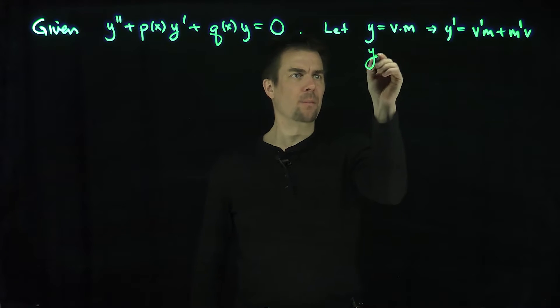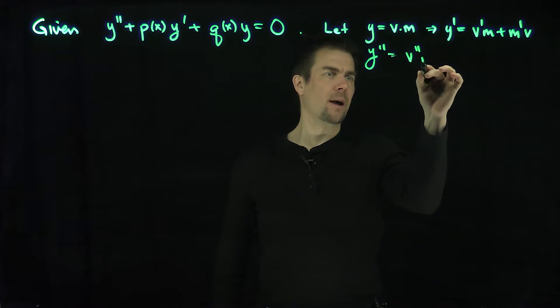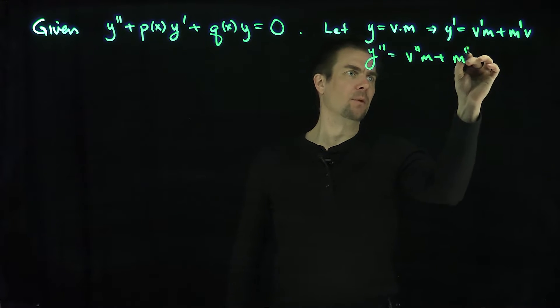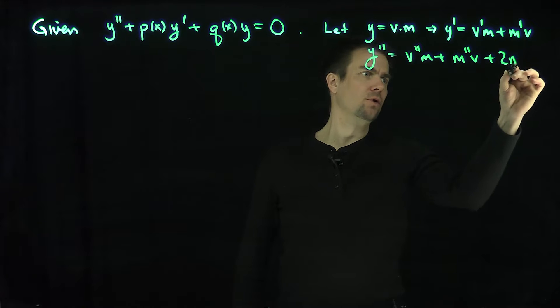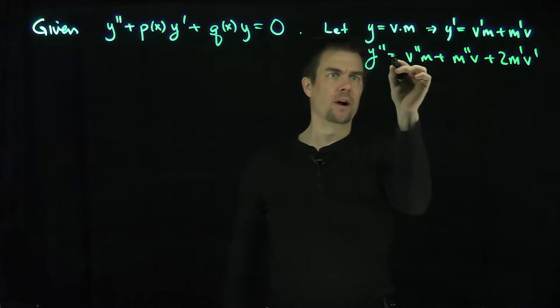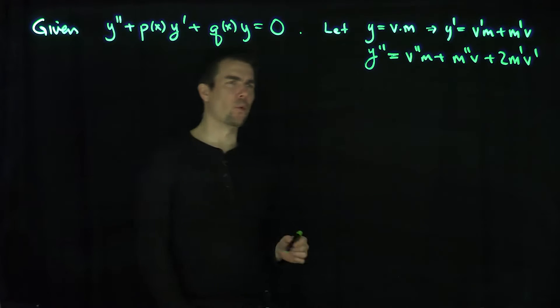And y double prime is going to be v double prime m plus m double prime v plus 2m prime v prime. So that's our standard way of reducing order.